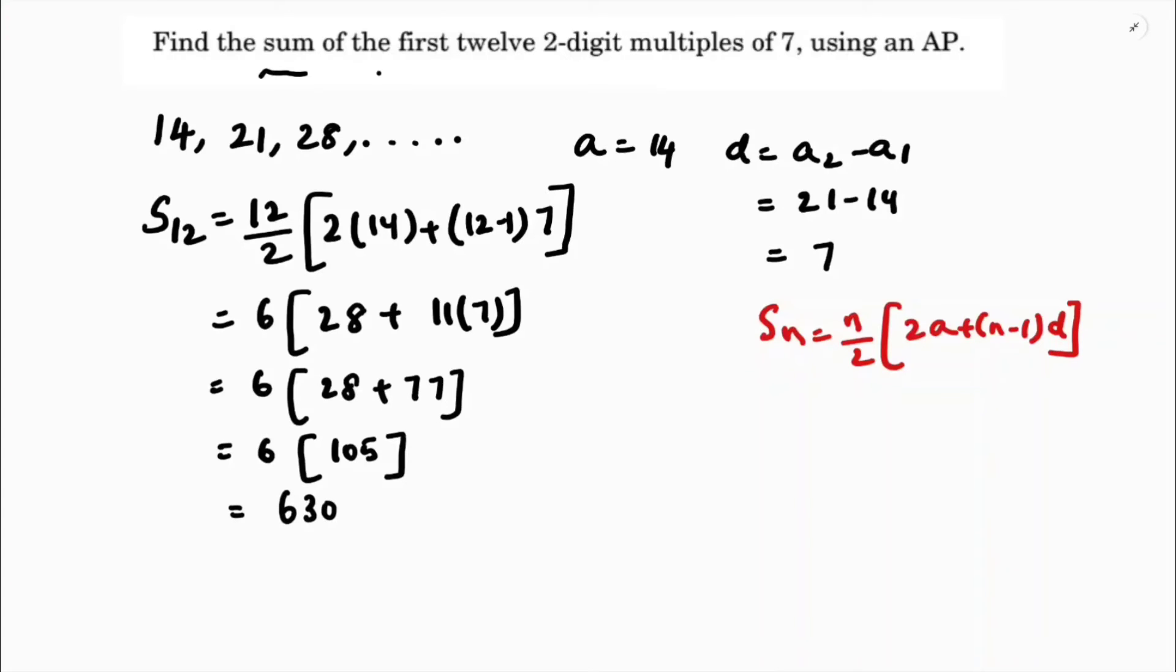So the sum of first 12 two-digit multiples of 7 is 630. They told two-digit multiples of 7, so the first two-digit multiple is 14. The first one is 7, but we cannot take 7 because it has a single digit. So we find S12 using AP, and the answer is 630.